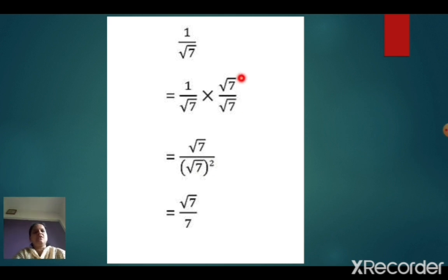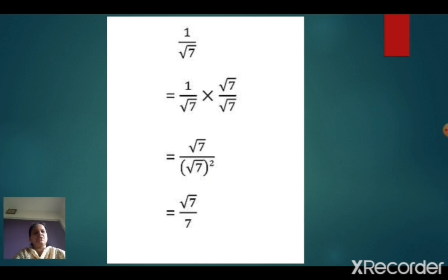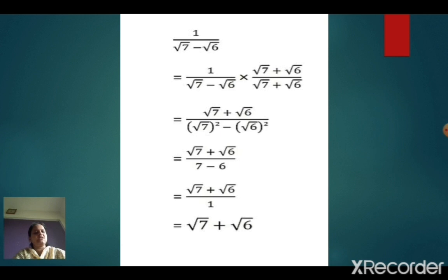Therefore, we will multiply numerator and denominator by root 7 upon root 7. So, 1 into root 7 is root 7. Root 7 into root 7 is root 7 squared, which equals root 7 upon 7. This is your final answer. Let us see the second sum.